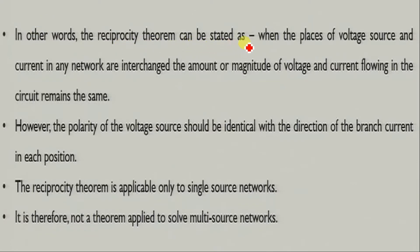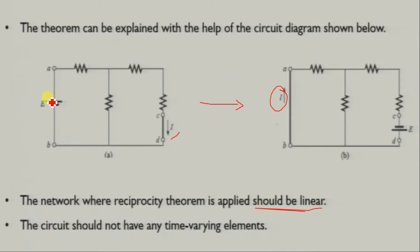In other words, the reciprocity theorem can be stated as: when the place of a voltage source and current in any network are interchanged, the magnitude of voltage and current flowing in the circuit remains the same. However, the polarity of the voltage source should be identical with the direction of the branch current in each position. You can see here: polarity plus here and minus here, but when we interchange, polarity becomes minus here and plus here.